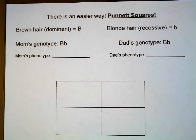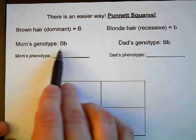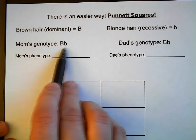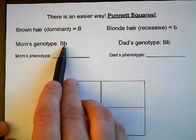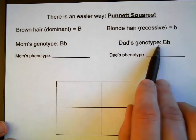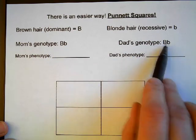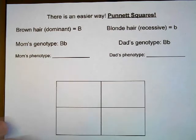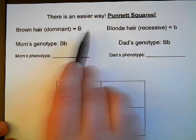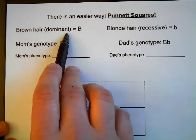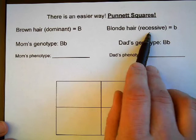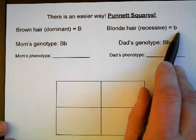In this example, we're going to look at the possible genetic combinations from a mom that has a heterozygous pair of alleles — one capital letter and one lowercase letter — with a heterozygous male who also has one capital letter and one lowercase letter. For this example, we're going to use hair color as our trait.